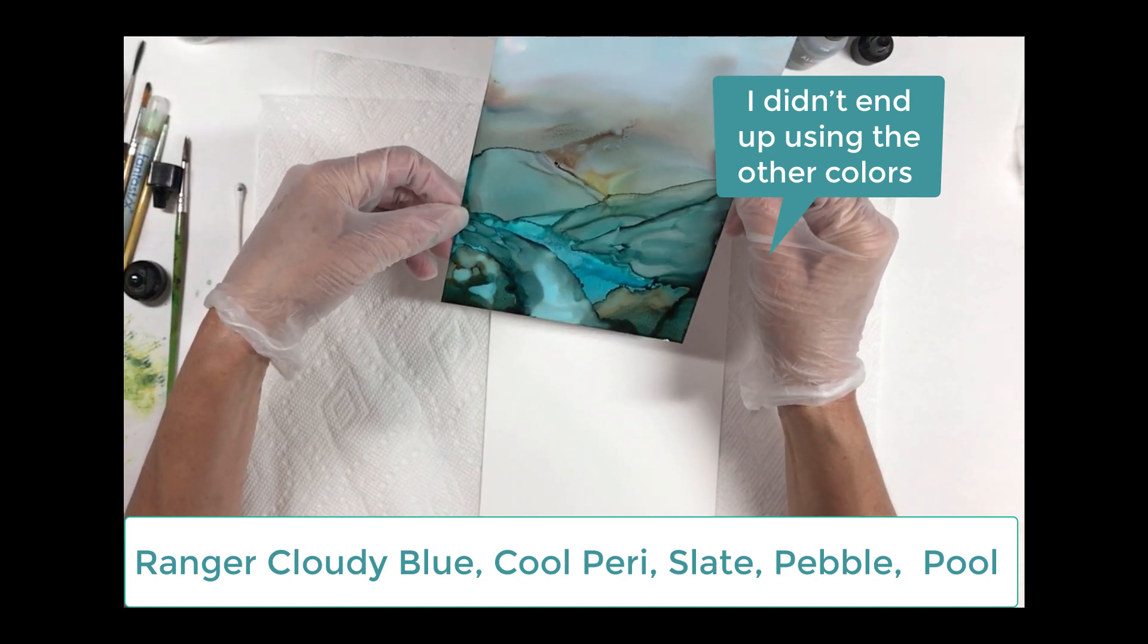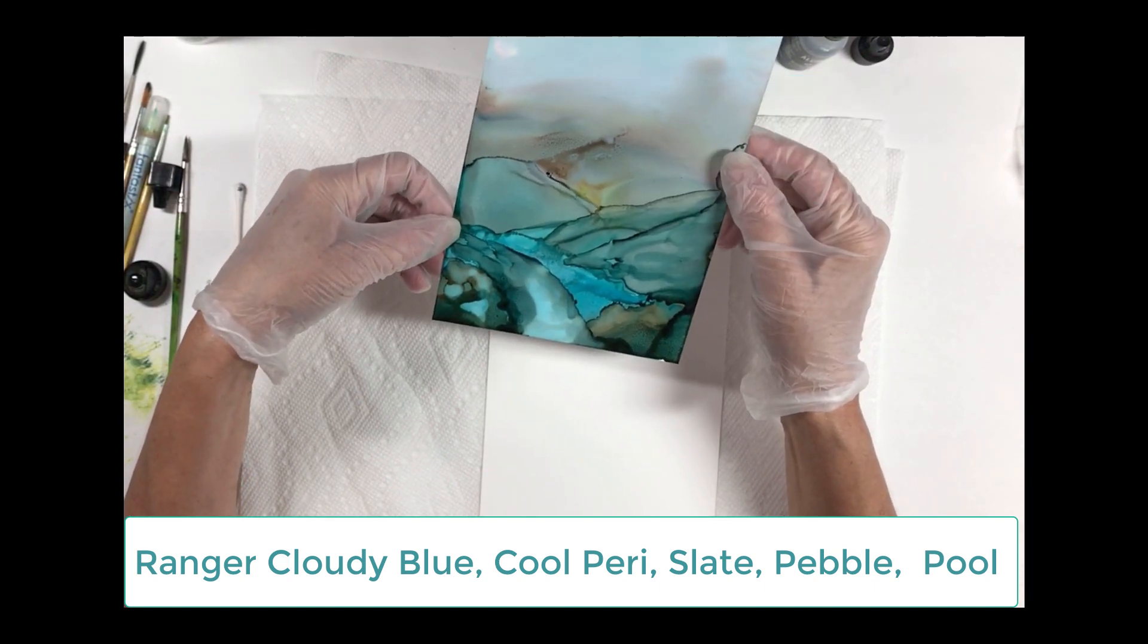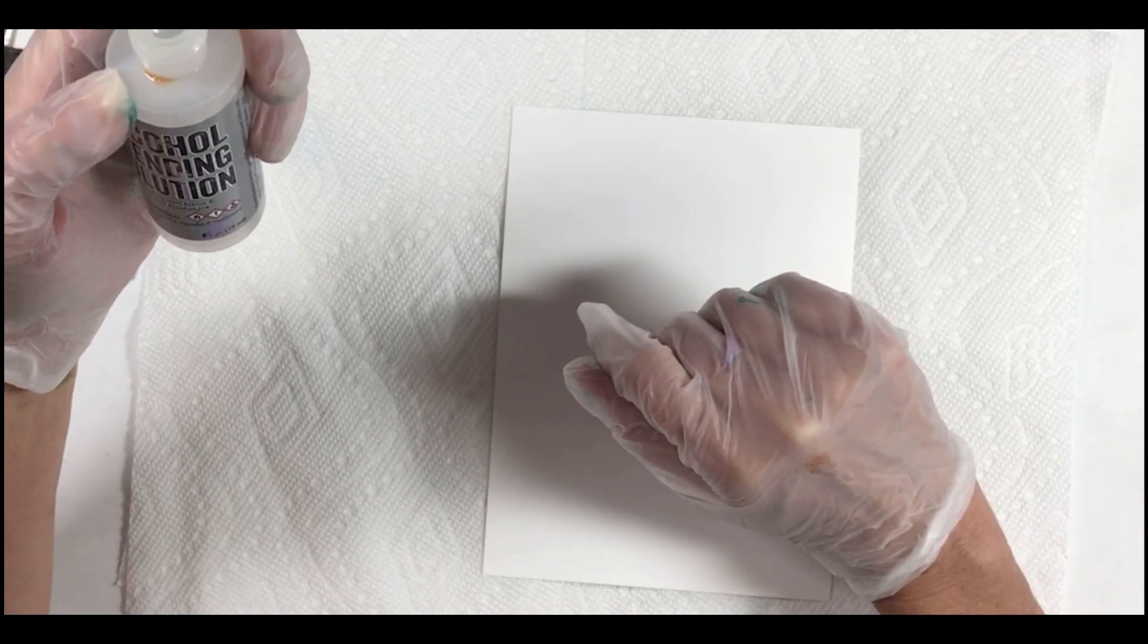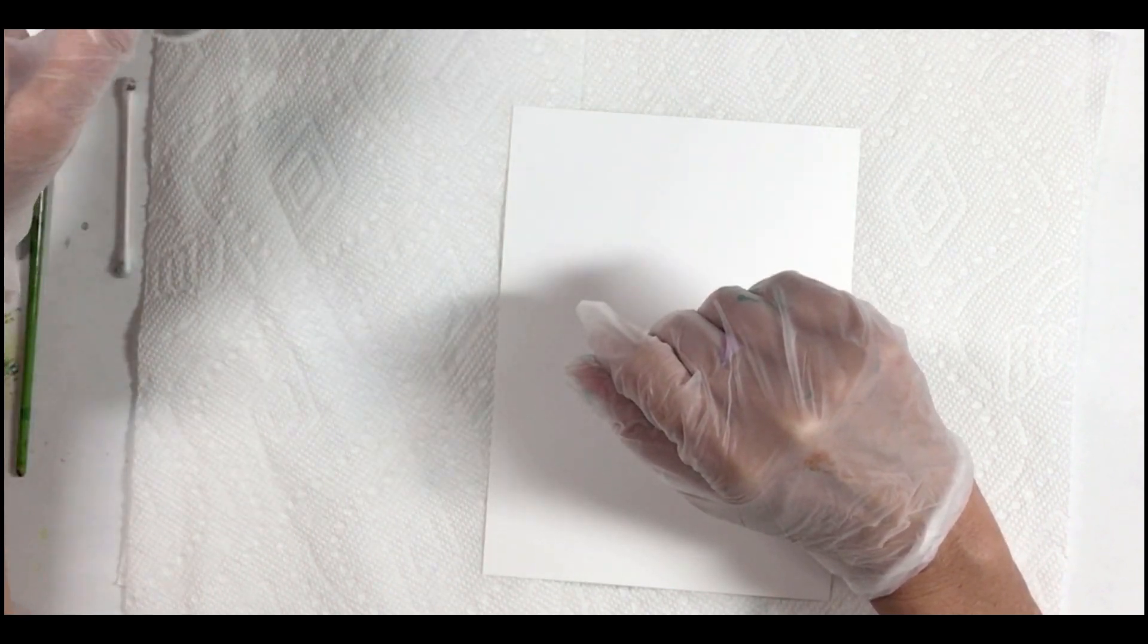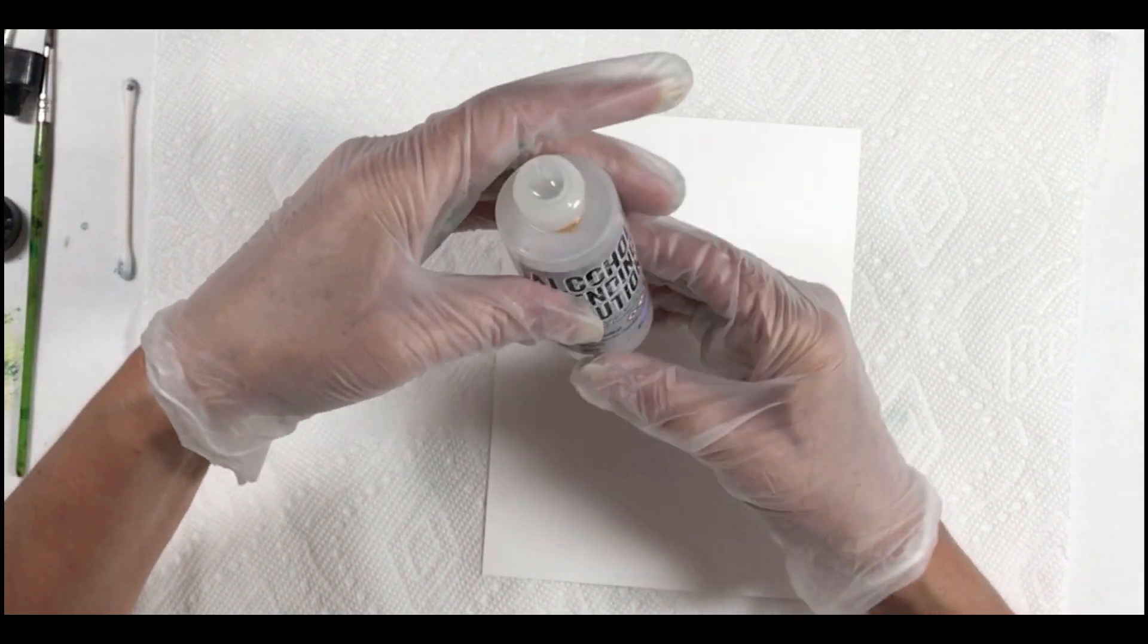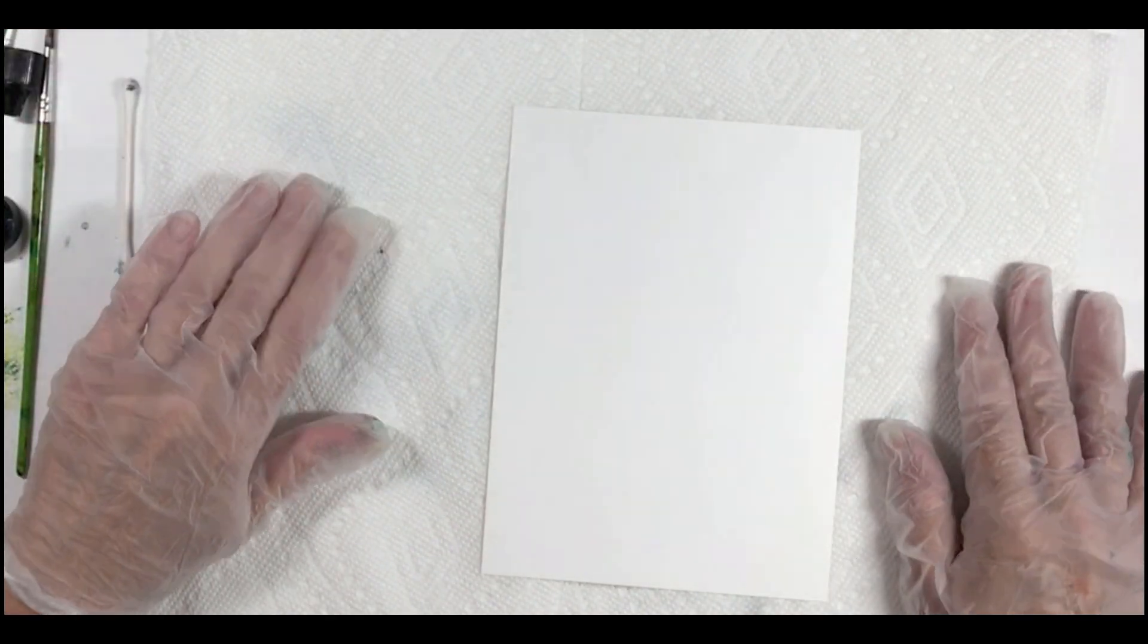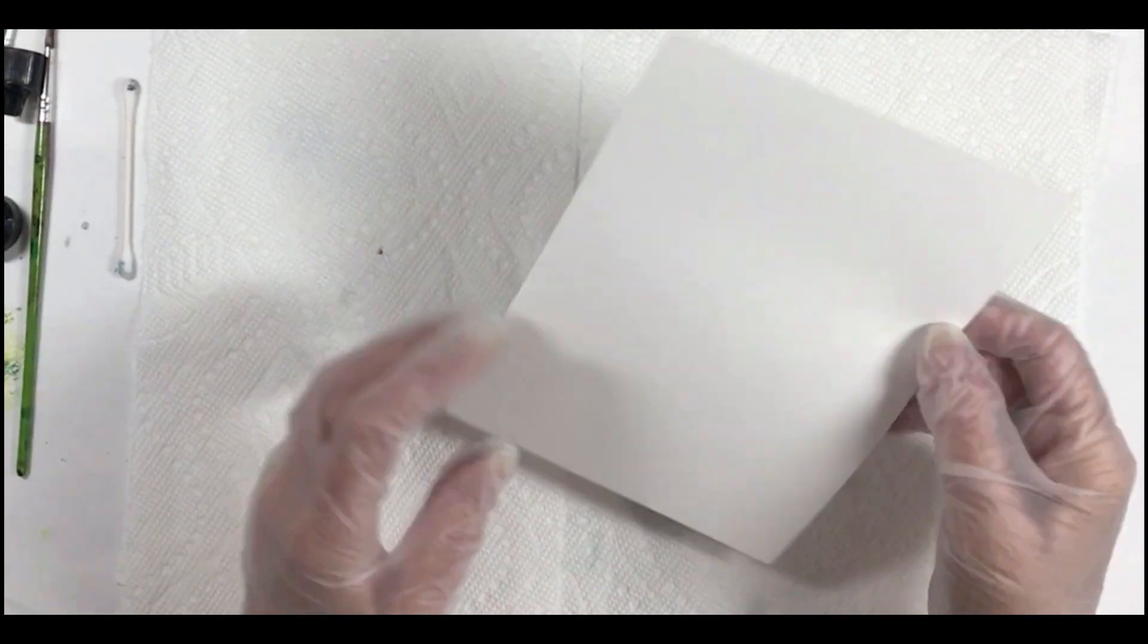So here's an example of a finished background. Let's get started. We're going to use alcohol blending solution and I'm using my own homemade recipe. This is two ounces of 91% alcohol and two drops of pure vegetable glycerin.